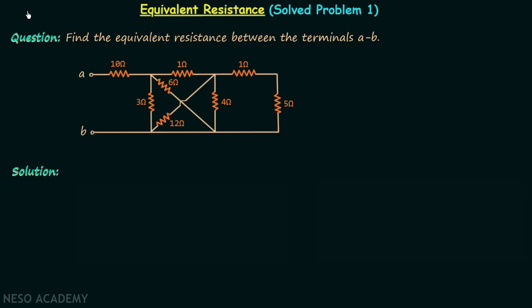We have completed series and parallel combination of resistors and we know how to simplify and calculate the equivalent resistance when the resistors are connected in series or in parallel. Now we will deal with more complex combinations.